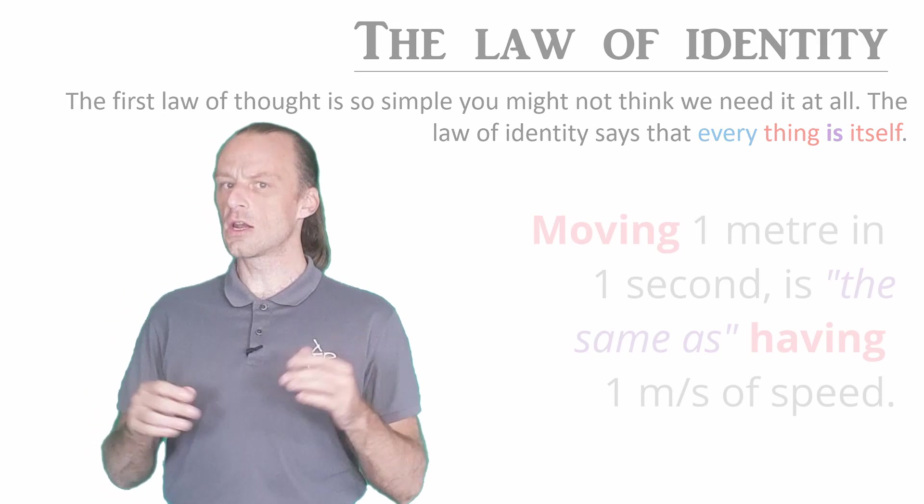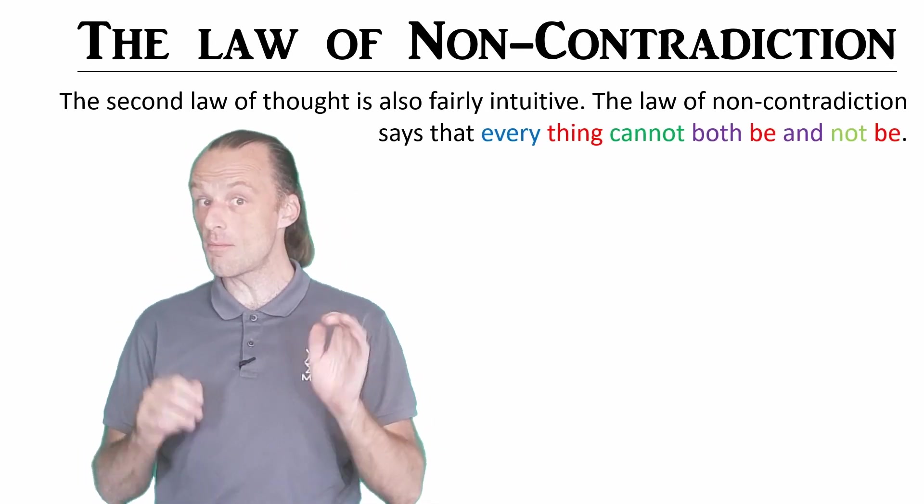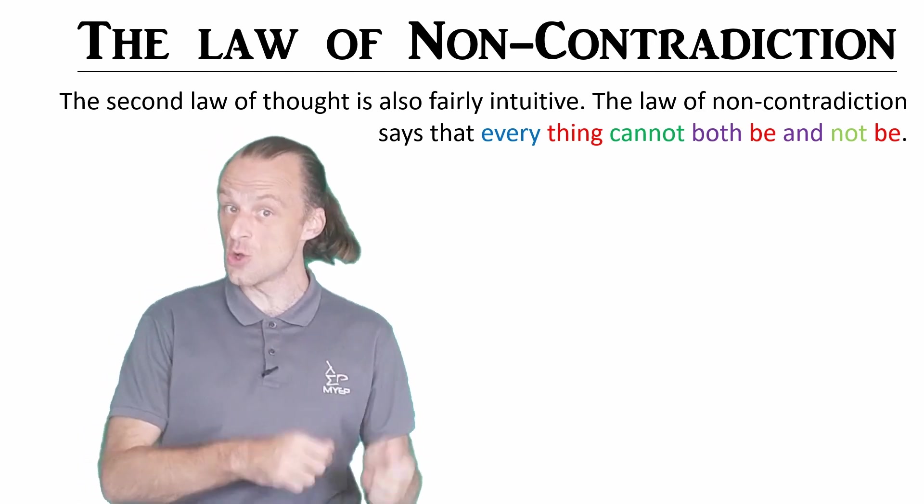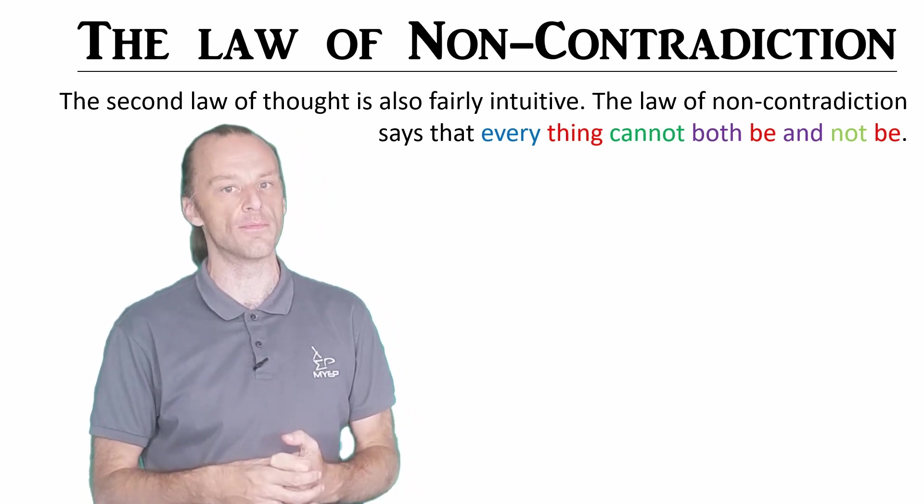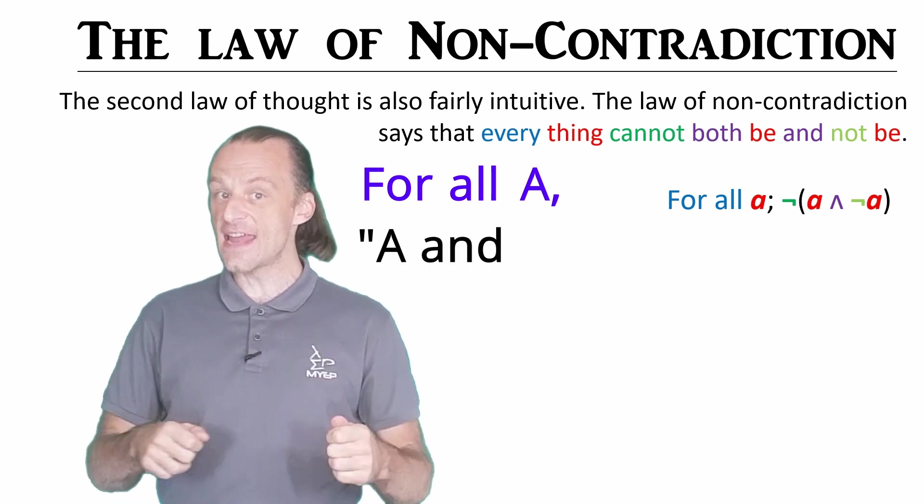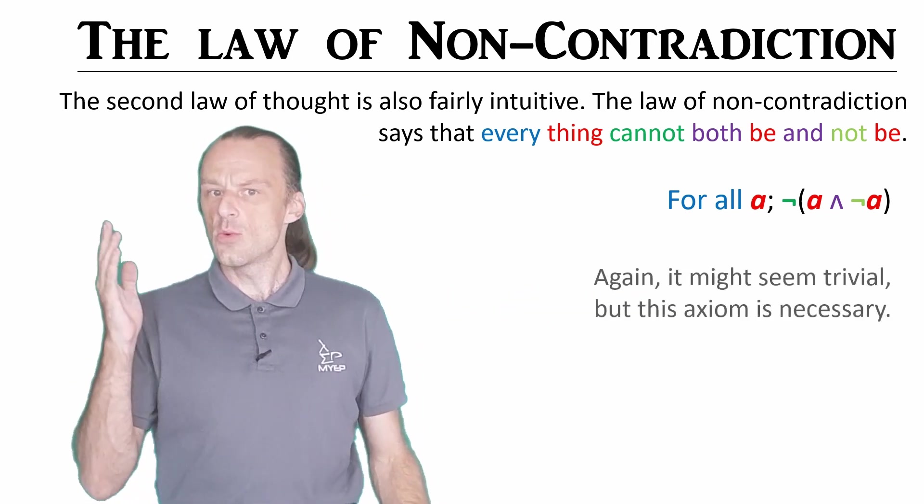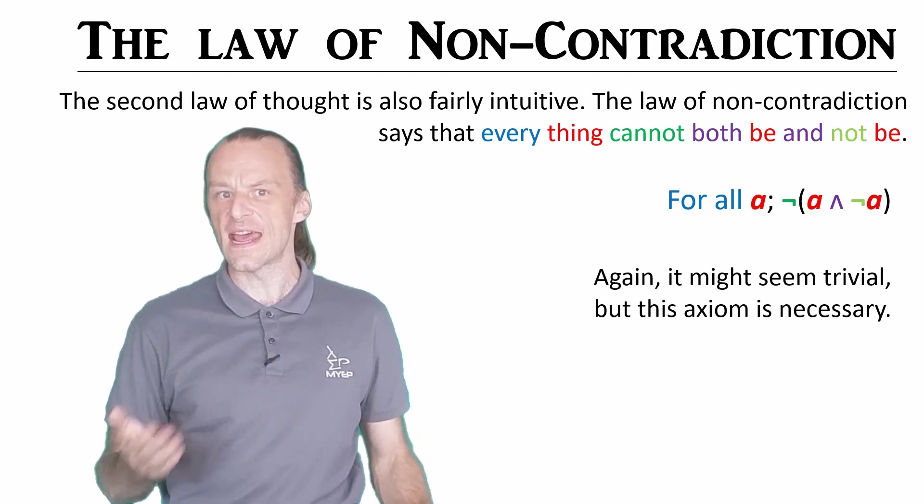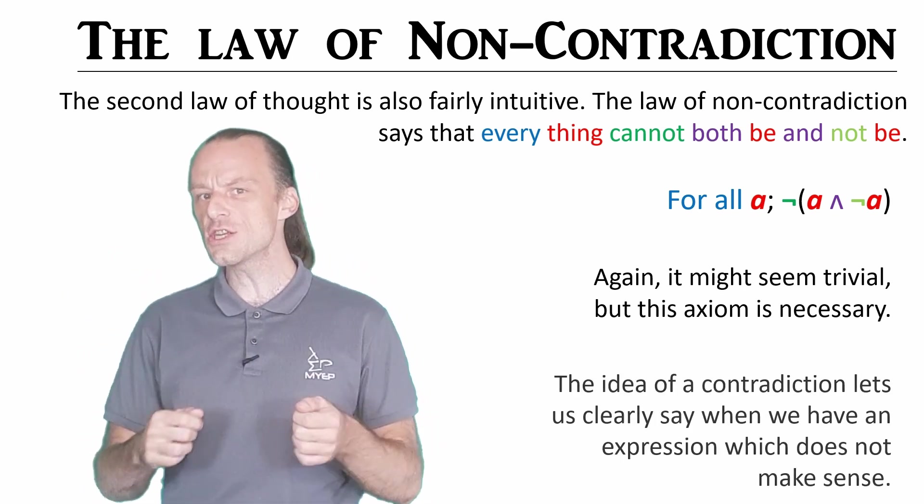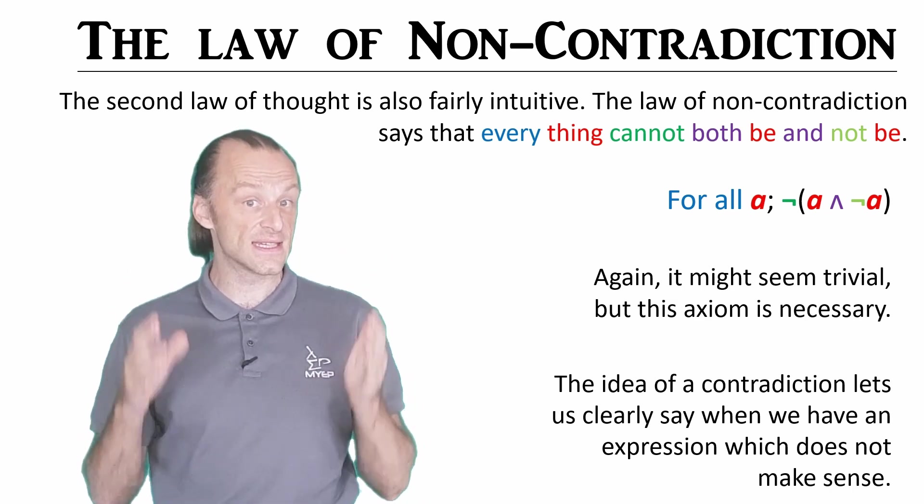The second law of thought is also fairly simple. It says that each thing cannot both exist and not exist at the same time. In formal terms, for all a, a and not a is always false. Again, we need to have this axiom in our system because a contradiction is what shows us clearly that something does not make sense.